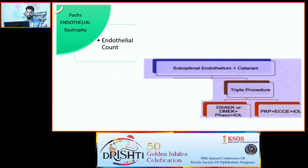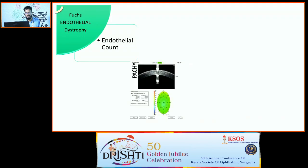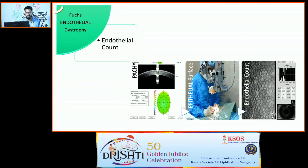For the triple procedure decision — DSAEK with phaco or PKP with ECCE — three factors must be considered: corneal thickness relative to 650 microns, the surgical view quality, and whether the endothelial cell count is above 1000 or not.